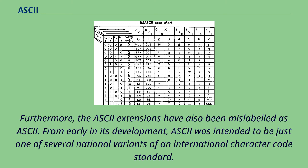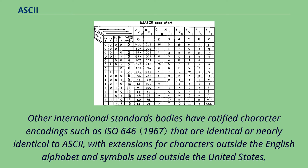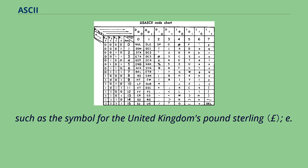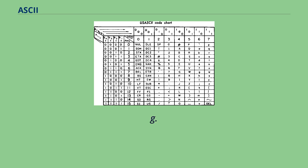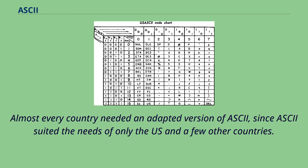Furthermore, the ASCII extensions have also been mislabeled as ASCII. From early in its development, ASCII was intended to be just one of several national variants of an international character code standard. Other international standards bodies have ratified character encodings such as ISO 646 that are identical or nearly identical to ASCII, with extensions for characters outside the English alphabet and symbols used outside the United States, such as the symbol for the United Kingdom's pound sterling. Almost every country needed an adapted version of ASCII, since ASCII suited the needs of only the US and a few other countries. For example, Canada had its own version that supported French characters.